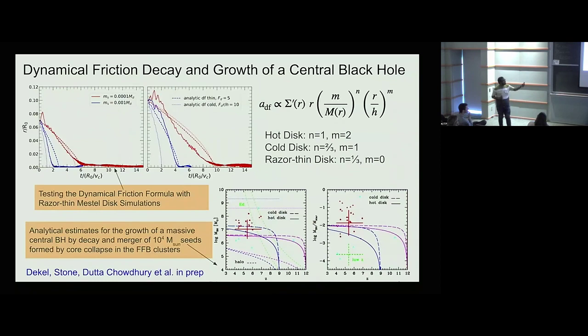Starting from Chandrasekhar's dynamical friction formula, we came up with some scaling arguments shown on the right of how to estimate the dynamical friction in a disk. It depends on the derivative of the surface density, the mass ratio of the black hole (small m), and enclosed mass within radius r, and r/h, which is the radius to height ratio of the disk. We have three different scaling relations based on whether the disk is hot, cold, or a razor-thin disk.